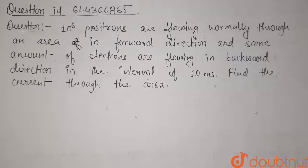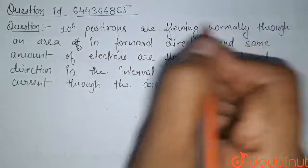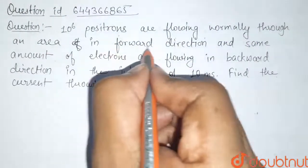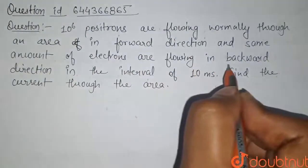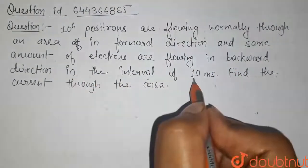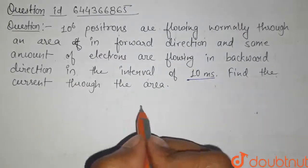Students, here is our question: 10^6 positrons are flowing normally through an area in forward direction, and the same amount of electrons are flowing in backward direction in the interval of 10 milliseconds. Find the current through the area.